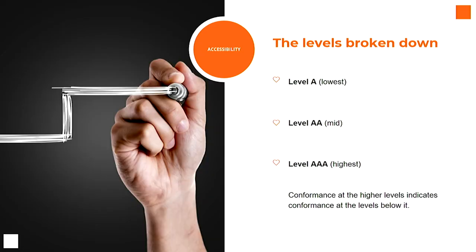So that breaks down into three levels. Level A is the lowest level, double-A is the middle and most common level that most people are able to achieve, and triple-A is the highest level. When we talk about the levels, it's basically a big checklist to determine where you sit. An example of one of these checkpoints might be: provide the text equivalent for every non-text element — so an alternate description for a photo or a video, graphical images, maps, animations, graphical buttons, sounds, those sort of things. If you meet that, there's one part of it that you've now satisfied.